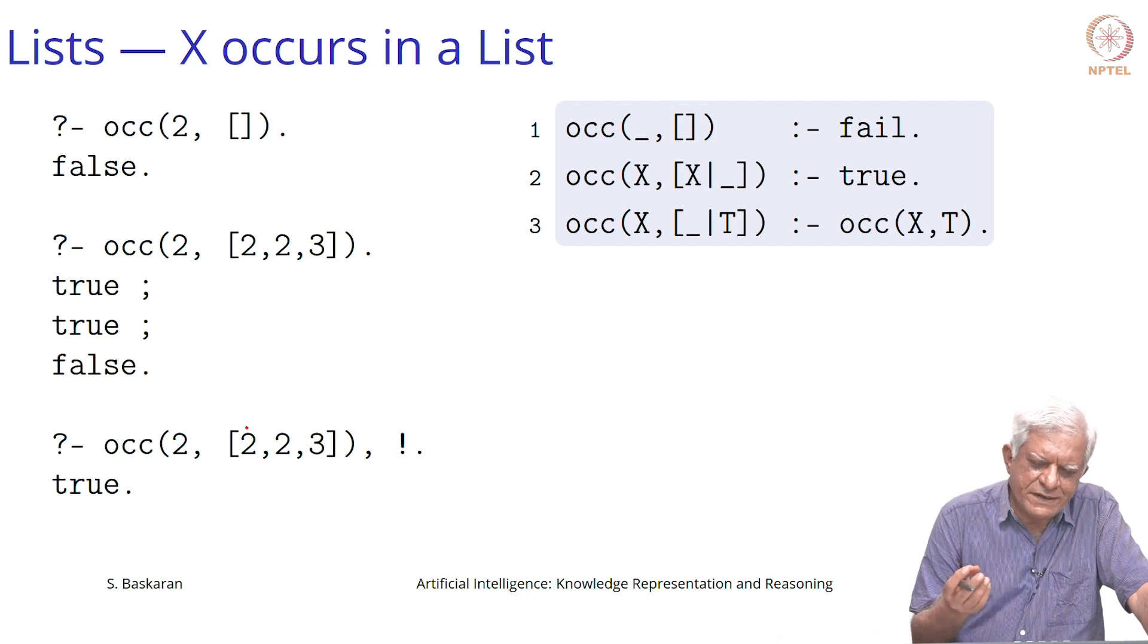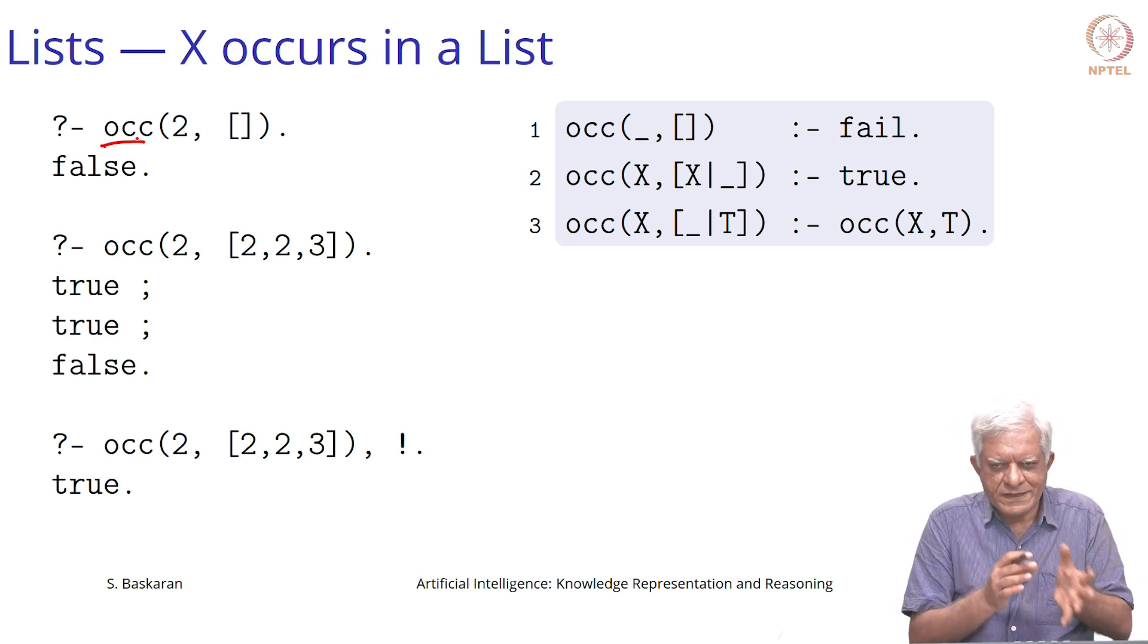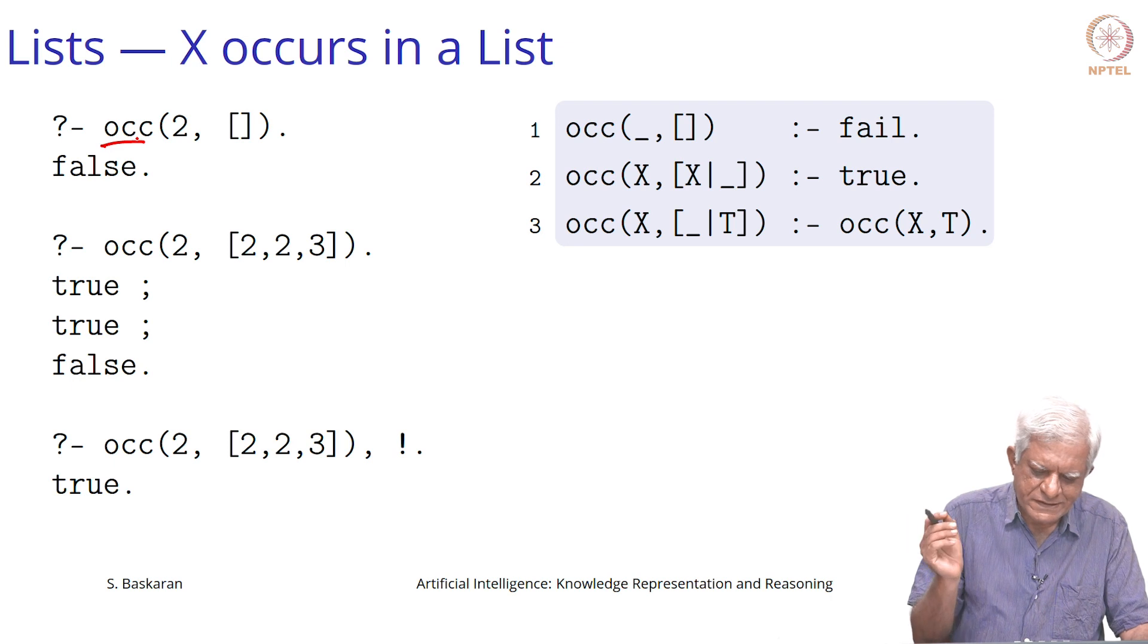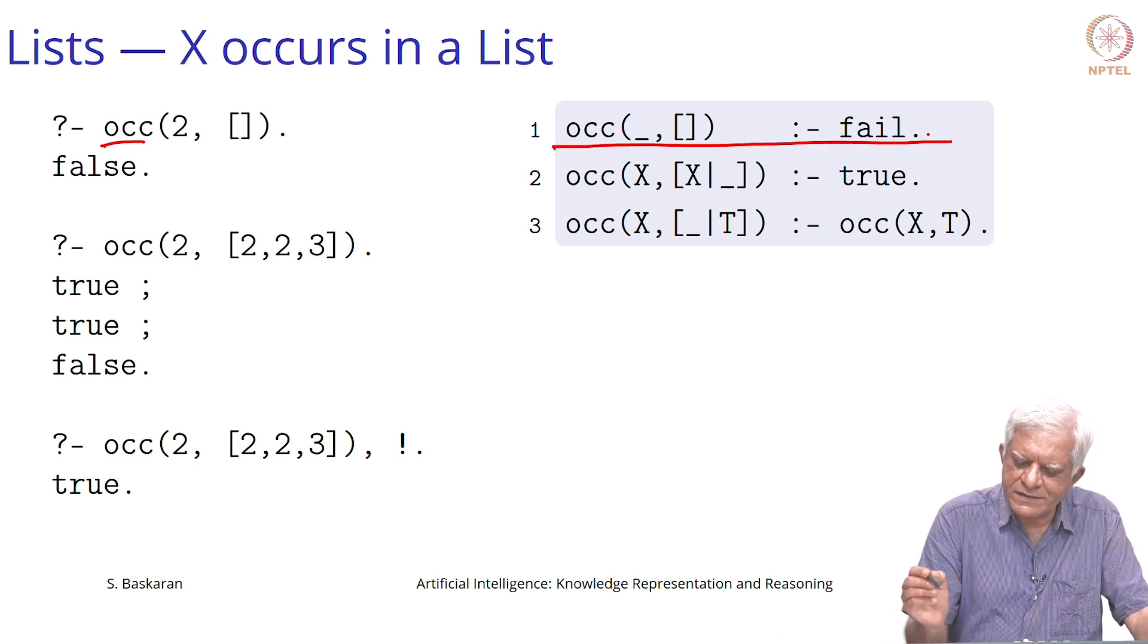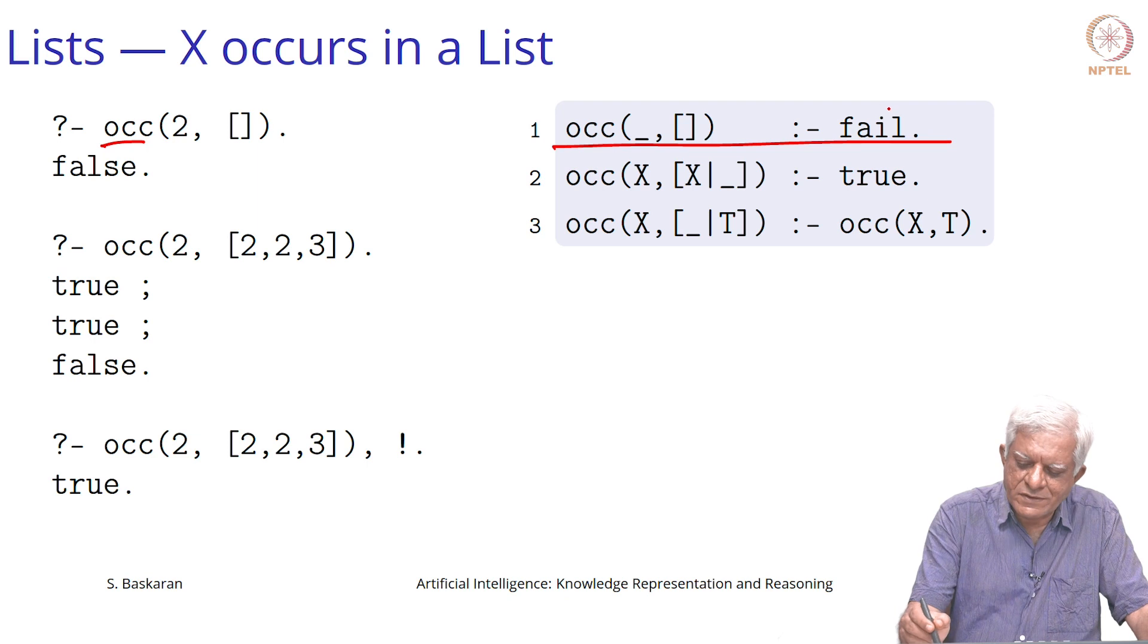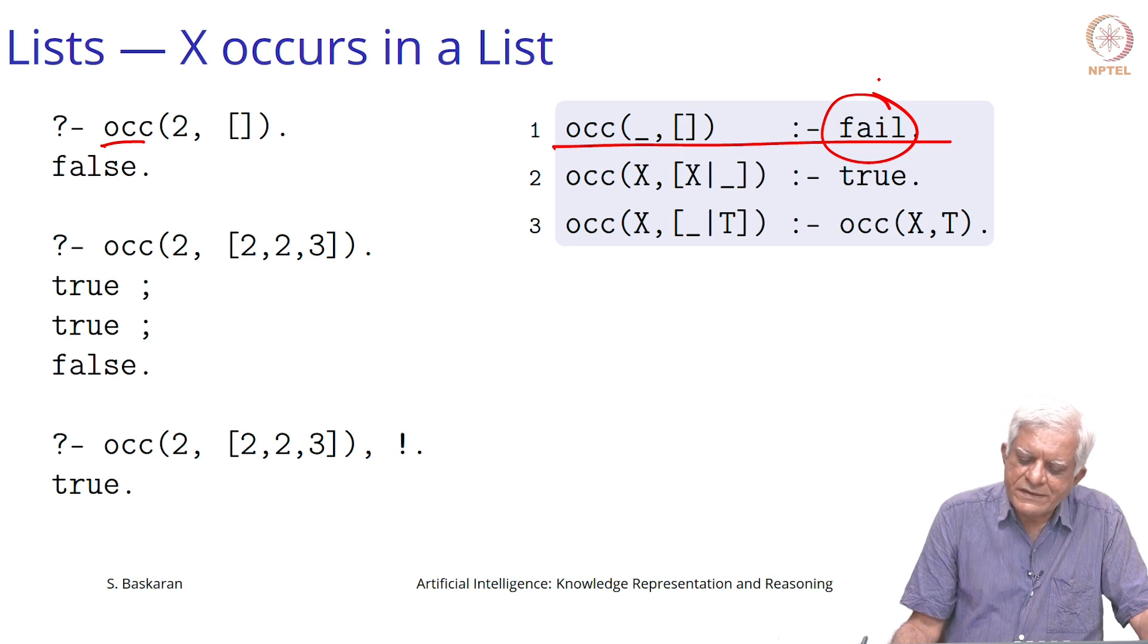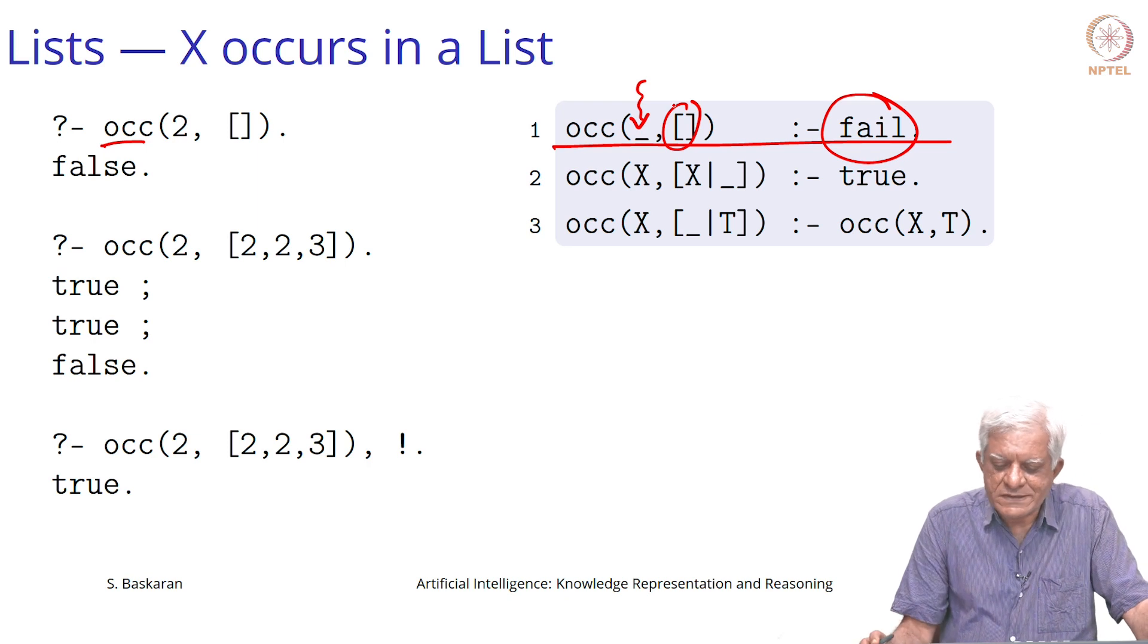If you want to write a program to find out whether an element is present in the list or not, let us call the name of this program as occurs, which we will abbreviate to occ here. We want to say that our first argument is some element, the second argument is a list, and we are asking whether this element is there somewhere in the list. This can be done by this program here. The first line written here is actually redundant. If you want to put it down to show that logically this can never happen because the condition is failed, which means the consequent can never be true, essentially what you are saying is that nothing can occur in the empty list.